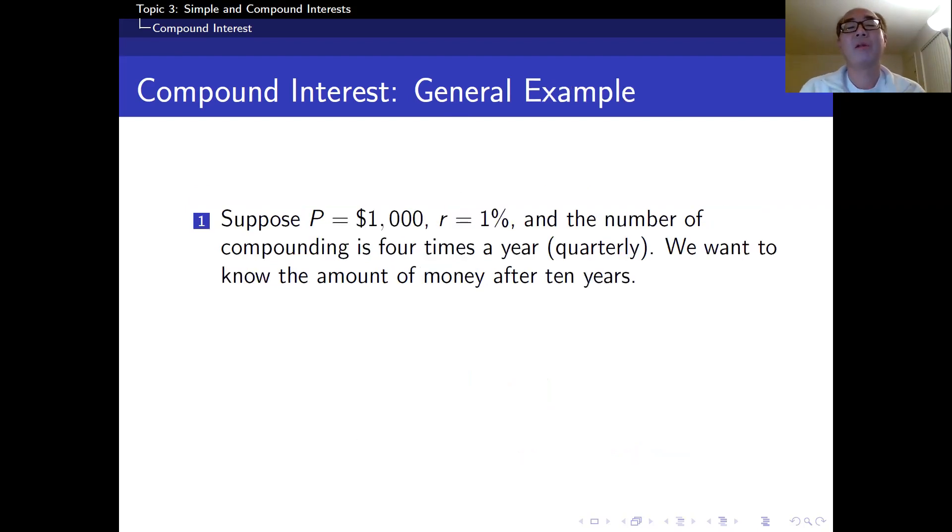Here's an example. Once again, the original principle is $1,000. Interest rate is 1%. And the number of compounding is quarterly, four times a year. We want to know the amount of money after 10 years. So we just use a formula like this. The principle is the same, 1,000. The interest rate is the same, 0.01. Then we have to divide the interest rate by four because it's compounded quarterly, four times a year. Then the power is four times 10. Then from the calculator, I got $1,105.03.